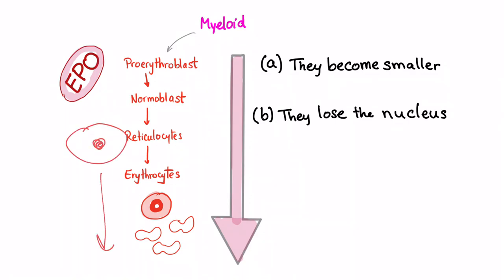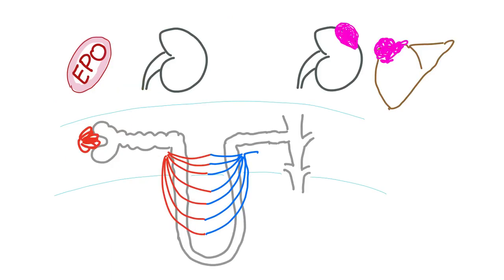All of this is influenced by a hormone produced by the kidney called erythropoietin, shortened to EPO. EPO, our hero. We said that EPO is produced in the kidney, but let's be more specific.